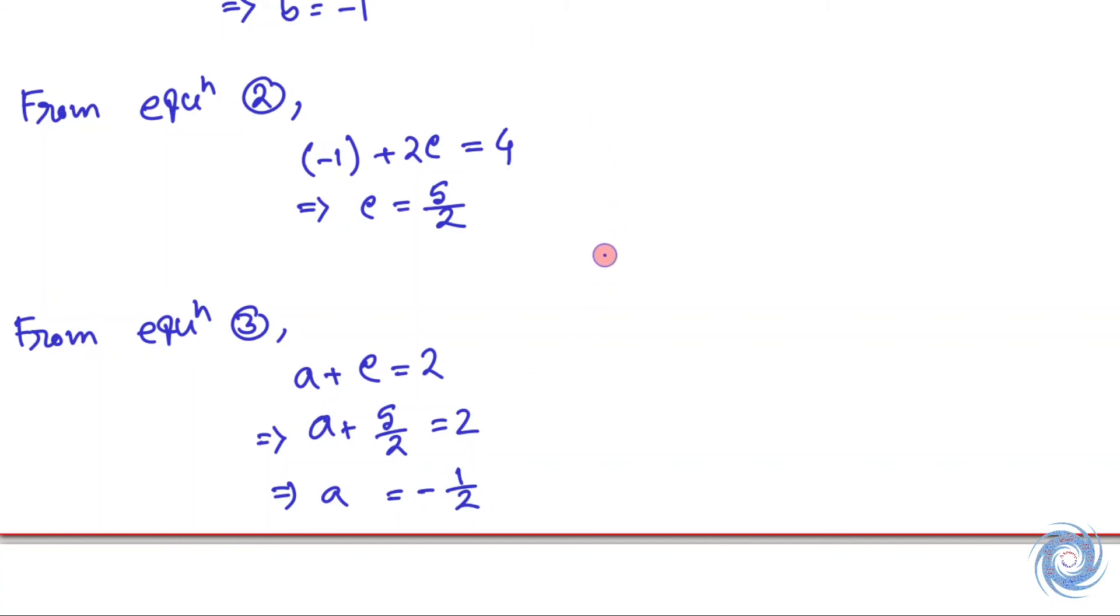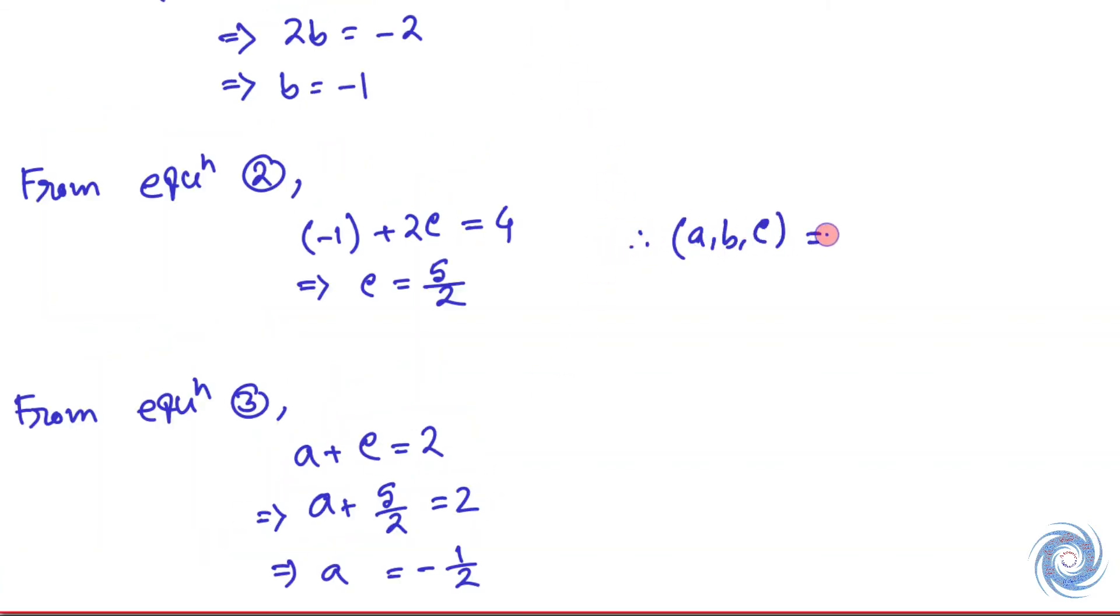Therefore we have a equals minus 1 and c equals 5 over 2, and therefore...